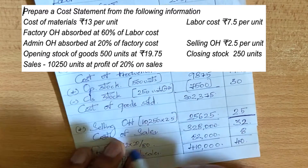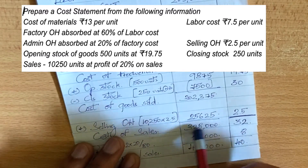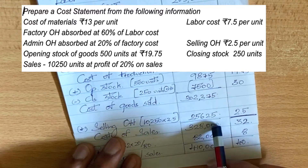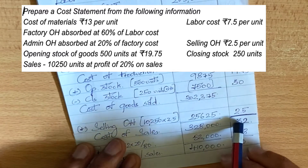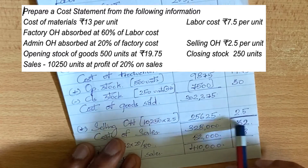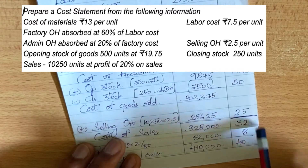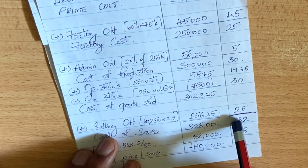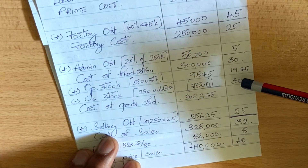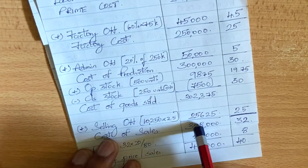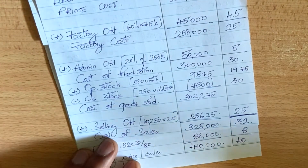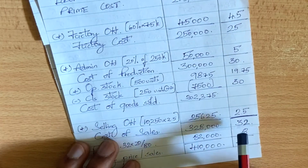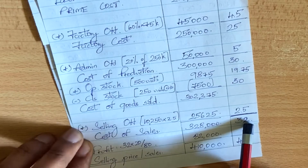So the total cost of sales is calculated. Dividing by 10,250 gives us a cost of sales per unit of 32. That is the cost of sales per unit.